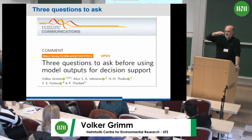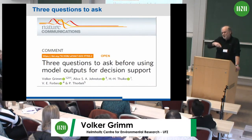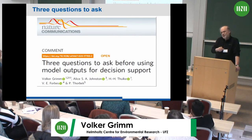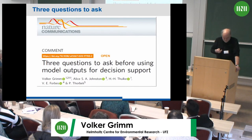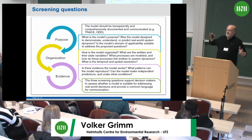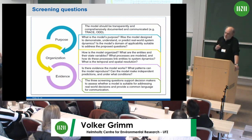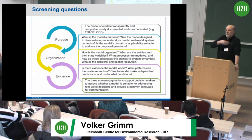Our TRACE document includes answers about uncertainty, verification, the background rationale, and so on. But what are the right questions to ask? This paper was triggered by the pesticide context but is much more general — this question framework can be applied to any type of model. Originally there were 10 questions, then seven — seven is a magic number, people like it. But a politician will not ask seven questions. It possibly came down to three questions about purpose, organization, and evidence.